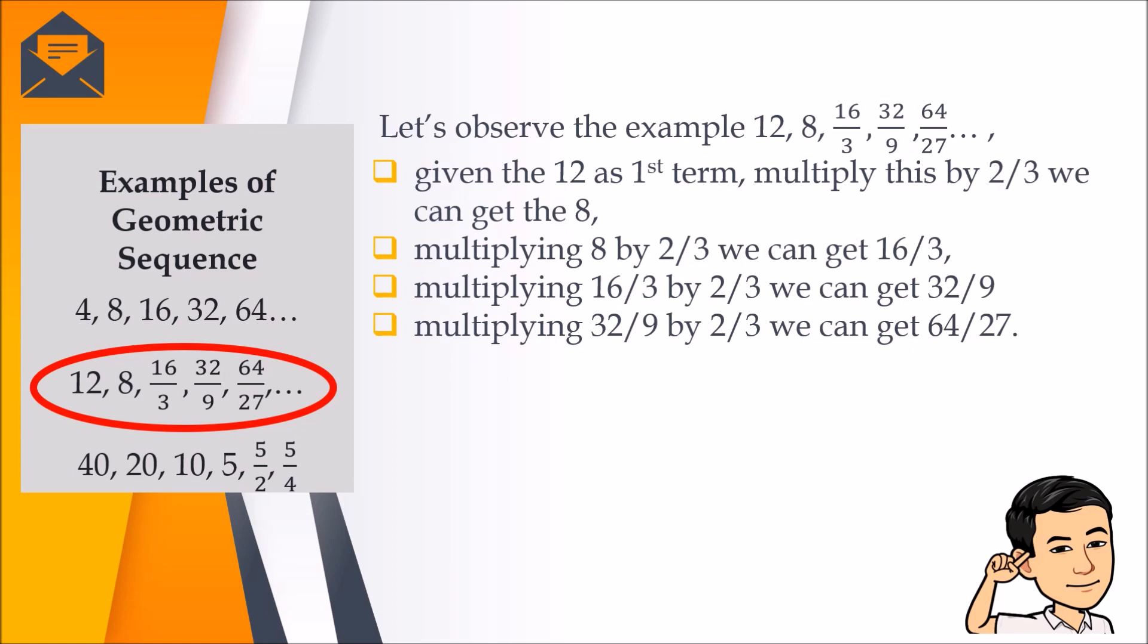Let us observe our second example: 12, 8, 16 over 3, 32 over 9, and 64 over 27. Given that 12 is the first term, multiply that by 2/3, we can get 8. Multiplying the 8 by 2/3, we can get 16 over 3.